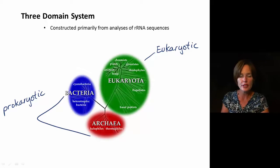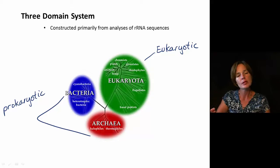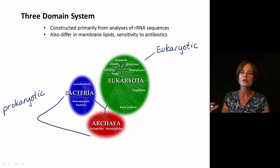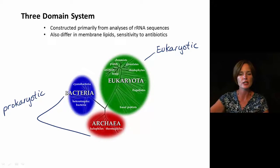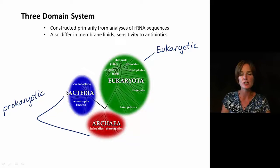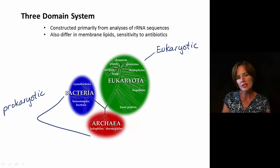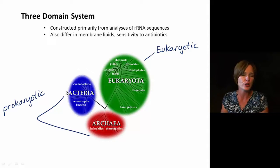That's not the only data that's gone into this, but that's what most of it was established with. There's also other data that's used, and some of that is the type of membrane lipids that are found in these organisms, their sensitivity to antibiotics. So we don't want to say that the only thing that these organisms share in common when they're placed into these groups are the ribosomal RNA sequences. They certainly do have other things in common, too.